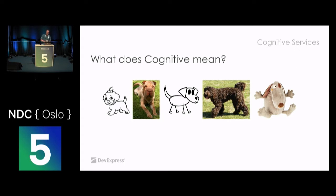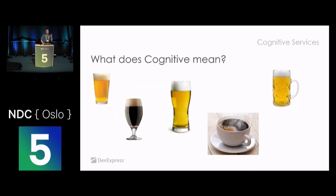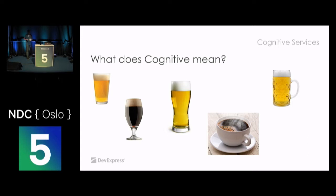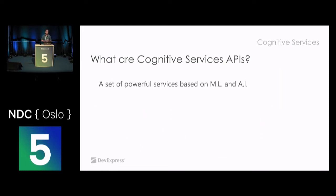Enough about the kids and the dogs. Let's get back to some serious work. If I ask any of you which picture doesn't belong here, it will take you a snap second to figure it out. But if you needed to write a computer program to tell you which one doesn't belong - that's going to be a tricky story. This is one of the really cool things that come with the Microsoft Cognitive Services, which is a really powerful platform built on top of machine learning and artificial intelligence.